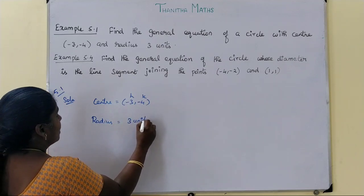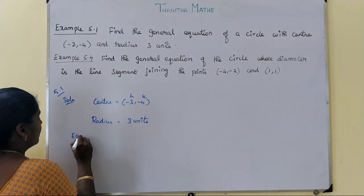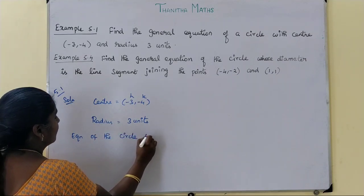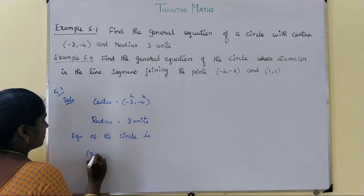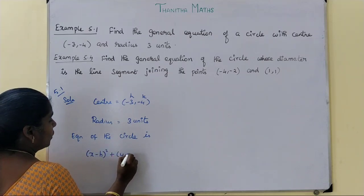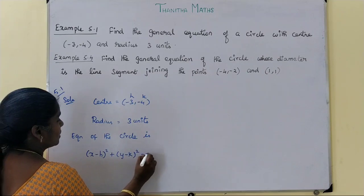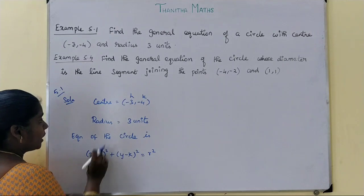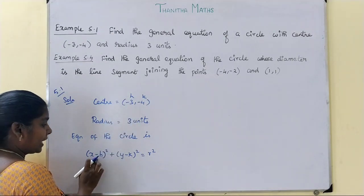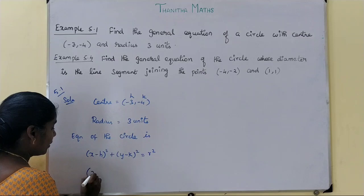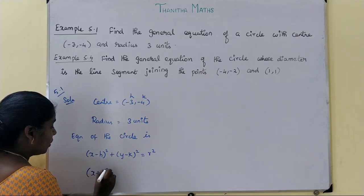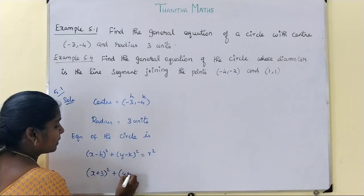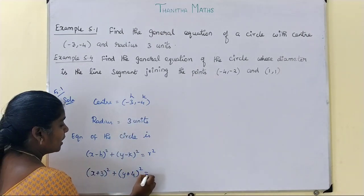The radius is 3 units. The equation of the circle uses the formula x minus h, the whole square, plus y minus k, the whole square, equal to r square. Substituting the values: h is minus 3, so x minus h becomes x plus 3; k is minus 4.